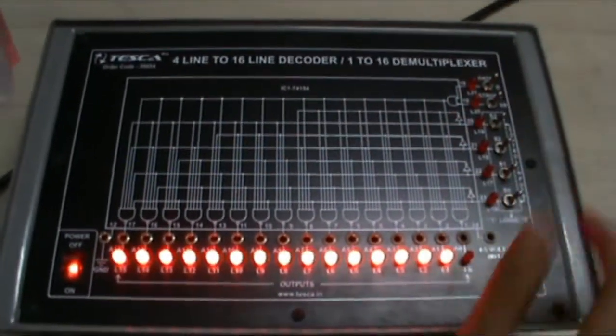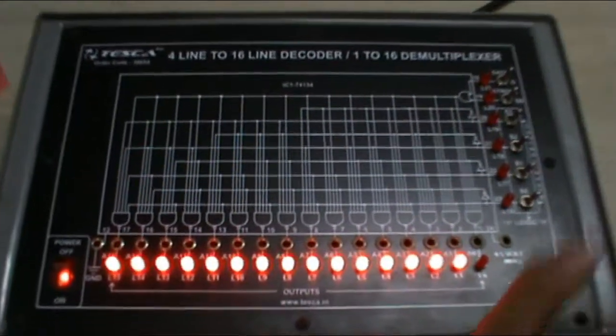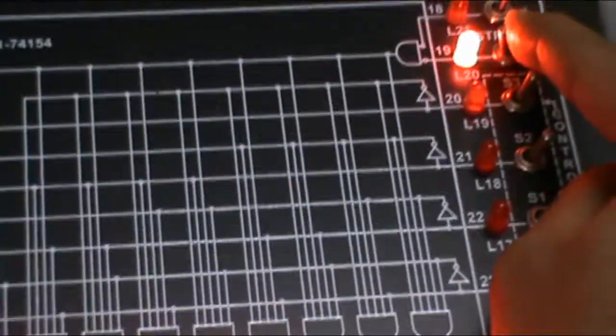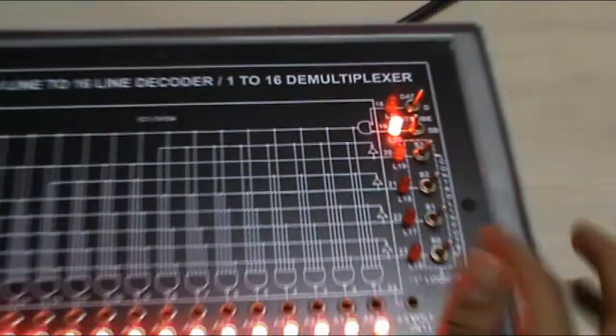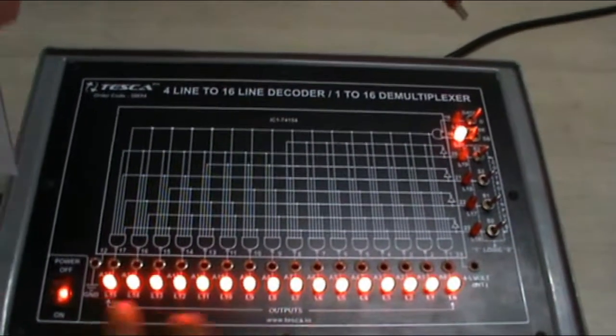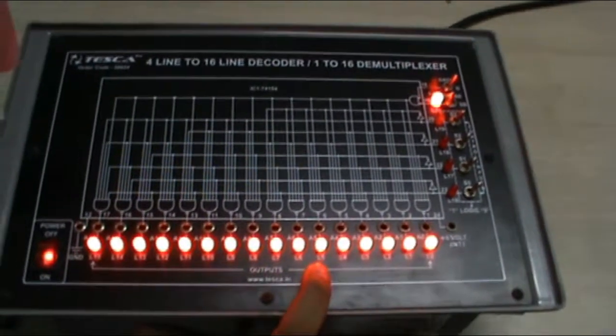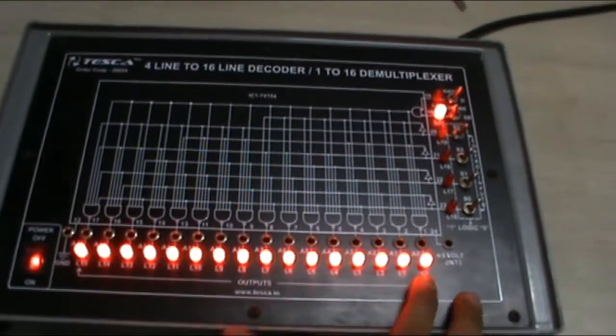In this we have one more thing. If the strobe switch SB is turned to logic 1, then irrespective of the control inputs all the LEDs from L0 to L15 will be on.